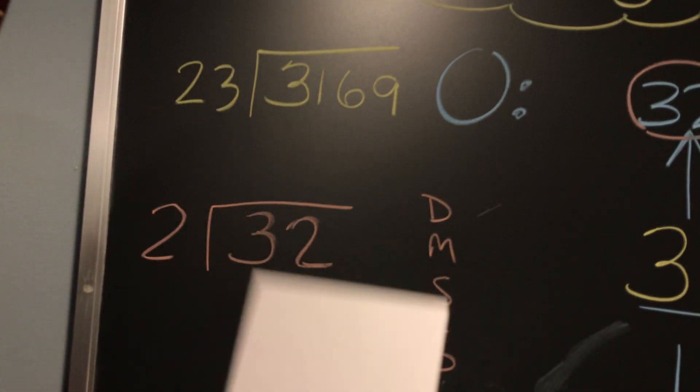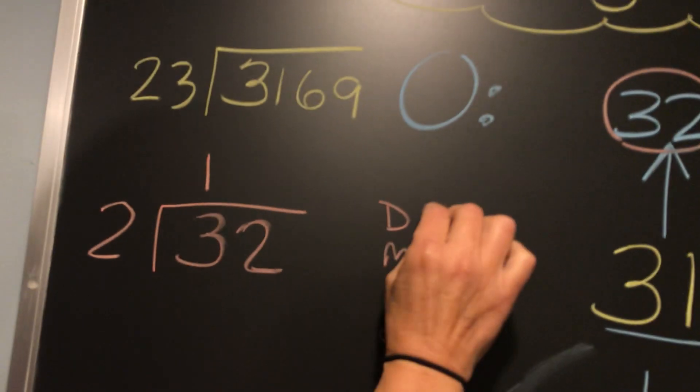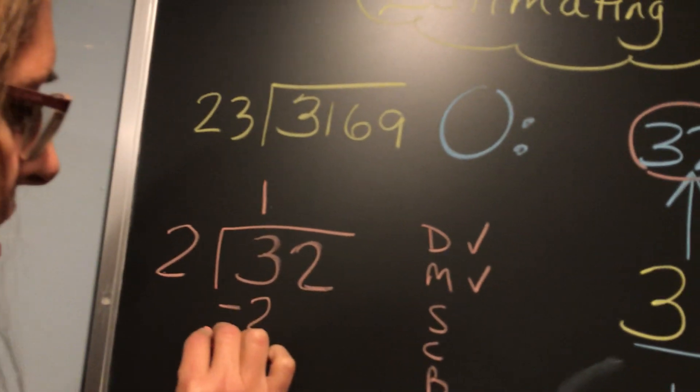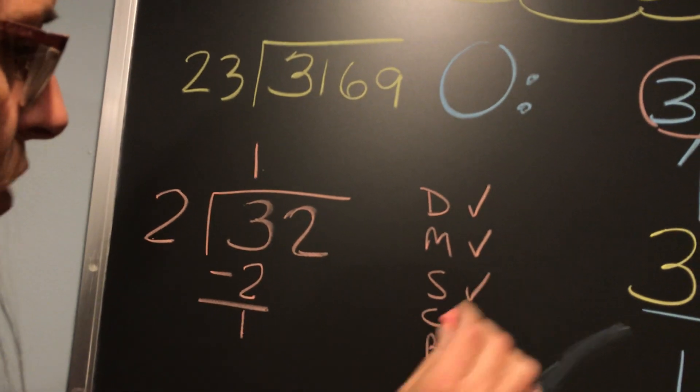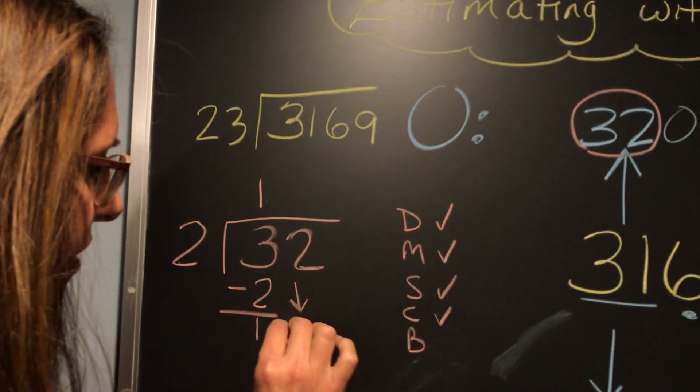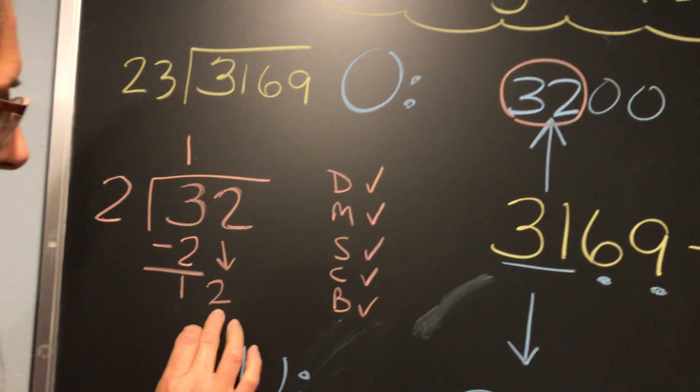2 goes into 3 one time. 1 times 2 is 2. That's your multiplication. Then we subtract and get 1. Is 1 less than 2? Yes, it is.